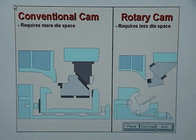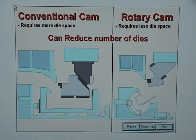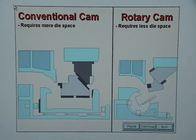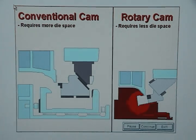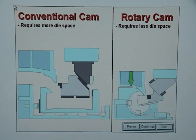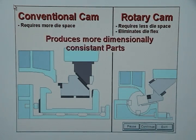Saving die space is important because it creates room for adding other operations to the die which can reduce the total number of dies required to make a part. Rotary cams also provide an extremely solid base for the die that prevents the die from flexing when under pressure from the press. This is important because eliminating die flex results in parts that are dimensionally consistent.